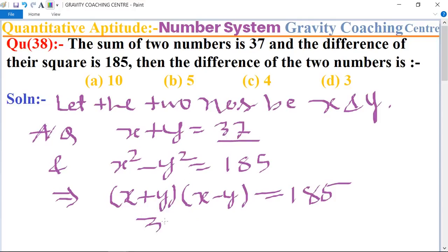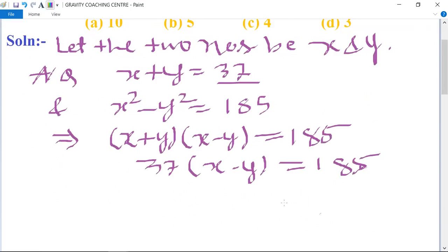Therefore, x - y = 185 ÷ 37. So 185 divided by 37 equals 5, therefore x - y = 5, which is the difference between the two numbers. Option B is the correct answer.